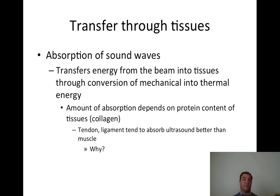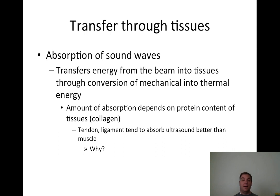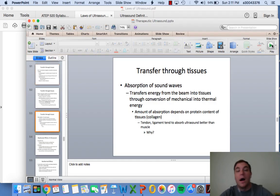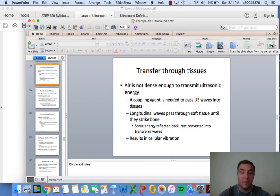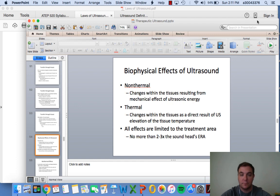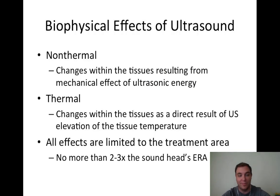Absorption of sound waves involves conversion of mechanical energy into thermal energy - now we're producing heat. The amount of absorption depends on the protein content of tissues and collagen. Tendon and ligament absorb ultrasound better than muscle because of higher protein content. Non-thermal ultrasound involves changes within tissues resulting from the mechanical effect of ultrasonic energy. Thermal effects are direct changes from ultrasound elevation of tissue temperature.